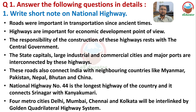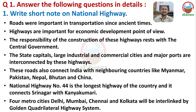Four metro cities — Delhi, Mumbai, Chennai and Kolkata — are located in four directions: Delhi in the north, Mumbai in the west, Chennai in the south, and Kolkata in the east. These four cities are connected through the Golden Quadrilateral highway system.